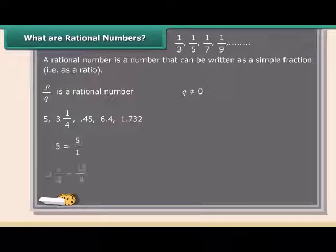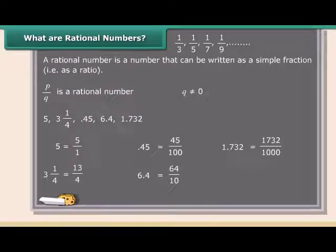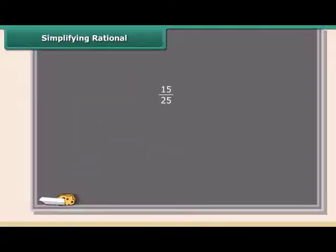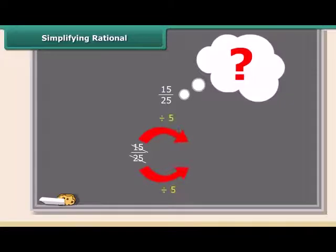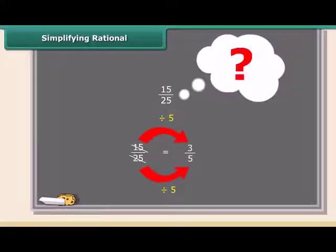Rational numbers are simply the numbers of arithmetic. Sometimes a rational number may not be in simplified form and can be further simplified. We can divide the numerator and denominator by 5 to get 3 by 5. Remember, we can simplify a fraction by dividing the numerator and denominator by a common factor.